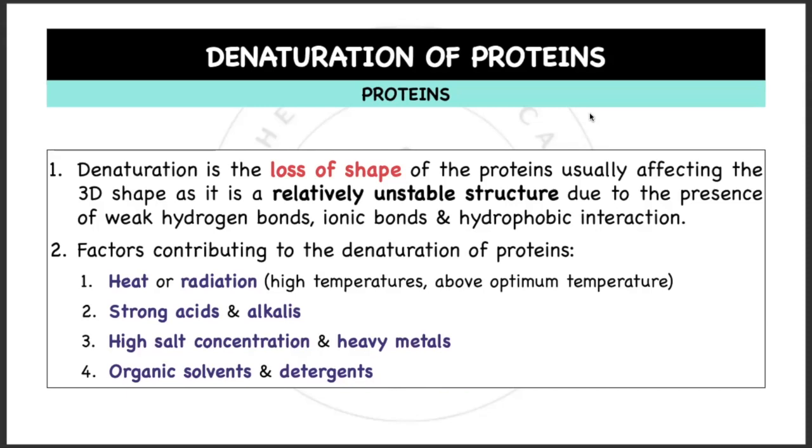Factors contributing to the denaturation of proteins: First, heat or radiation such as high temperatures above optimum temperature. The heat or radiation will increase the kinetic energy of the molecules and this increased kinetic energy causes the atoms of the protein to vibrate violently, causing the hydrogen and ionic bonds to break, hence causing denaturation.